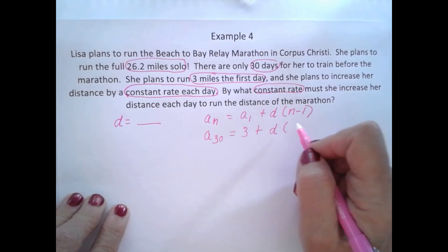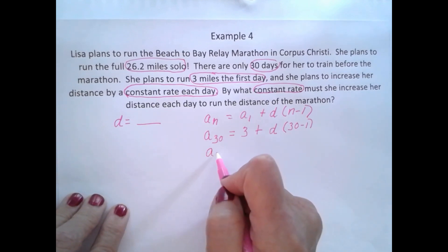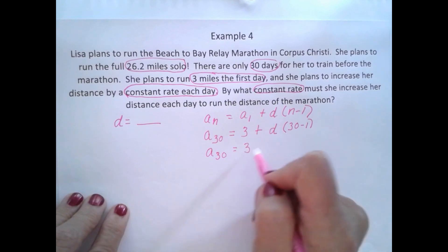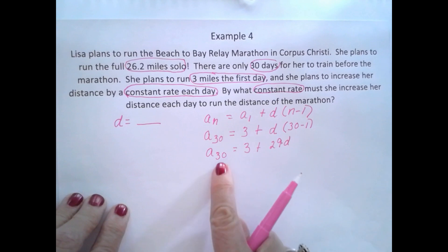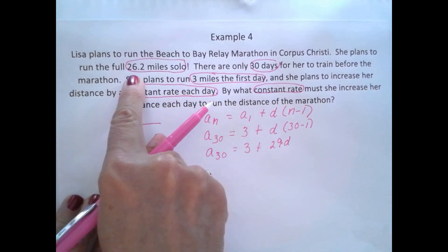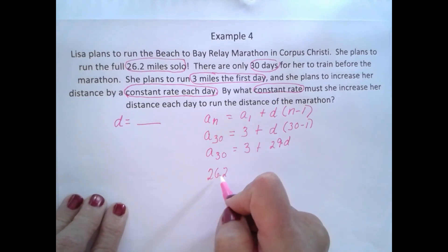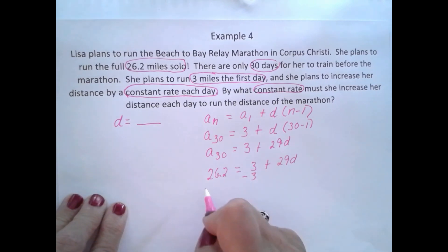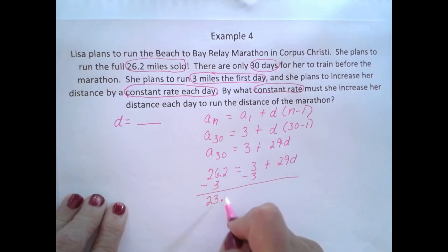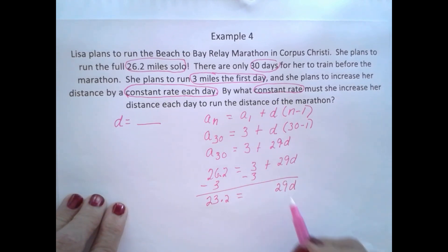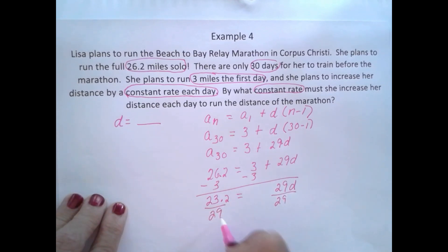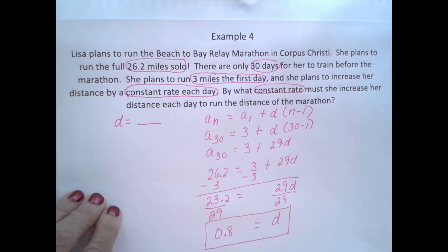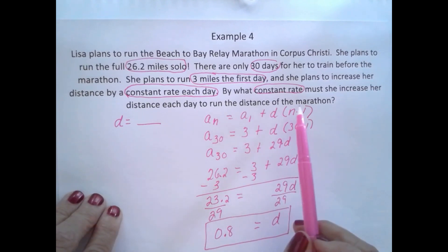We're looking for the common difference D. This is an arithmetic sequence, so we'll use the explicit formula: A sub n is equal to A sub 1 plus D times (n minus 1). A sub 30 is equal to 3 plus D times (30 minus 1), which gives 3 plus 29D. A sub 30 is 26.2, so 26.2 is equal to 3 plus 29D. Subtracting 3 from both sides: 23.2 is equal to 29D. Dividing by 29: D is equal to 0.8. Lisa would have to increase by eight-tenths of a mile each day after the first day to be able to run the full marathon distance.